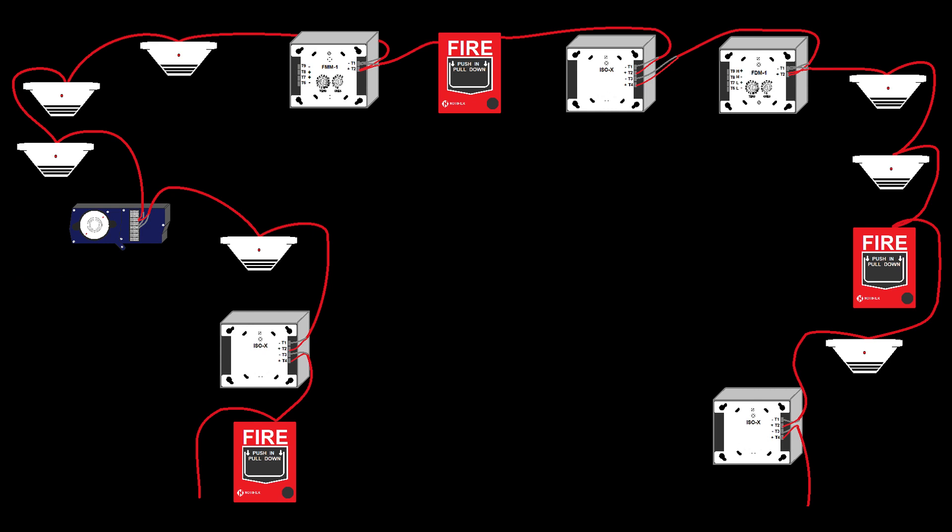Isolator modules work in pairs. If there is a short in the circuit between two isolator modules, they will remove that portion of the circuit from the loop, protecting the remainder of the loop from being affected by the short.